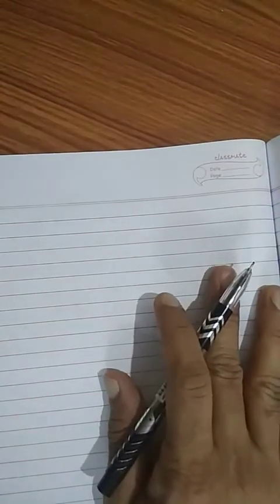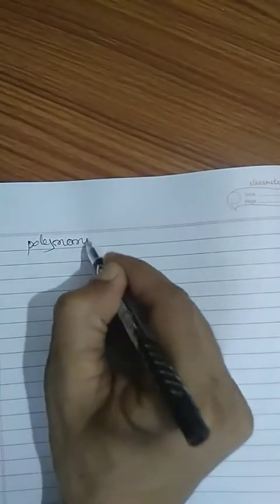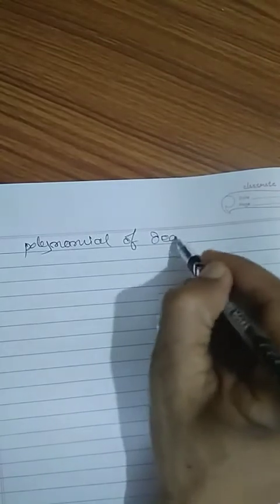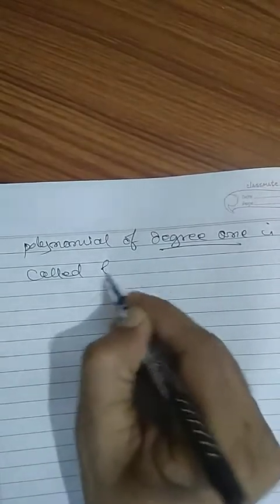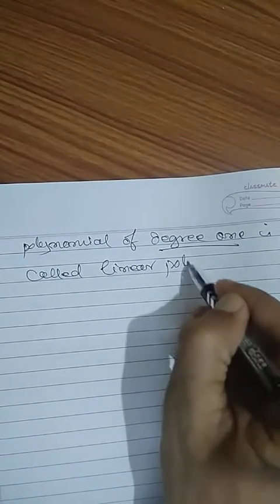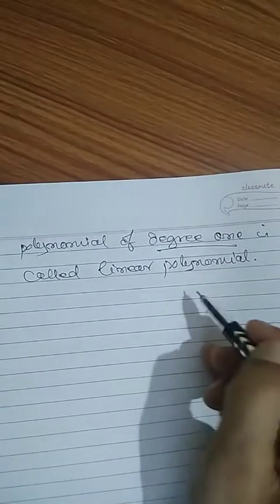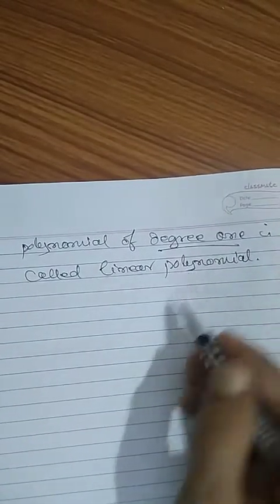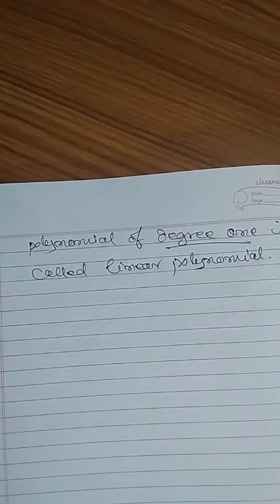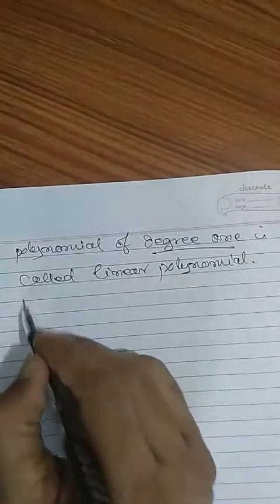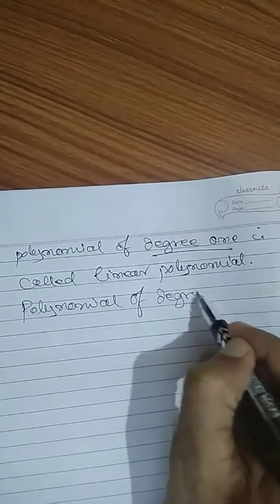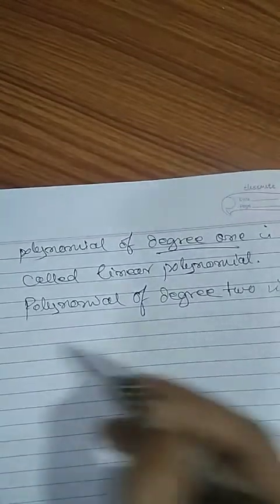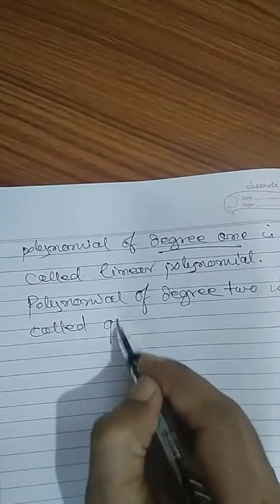What is a linear polynomial? A polynomial of degree 1 is called a linear polynomial. If the degree is 2, then it is called a quadratic polynomial. A polynomial of degree 2 is called a quadratic polynomial. These things we have discussed in 9th class.